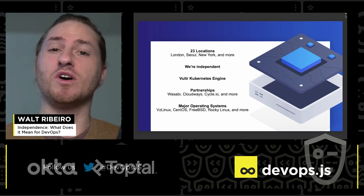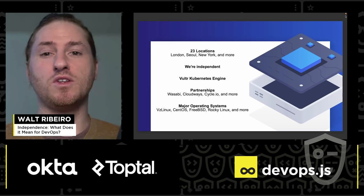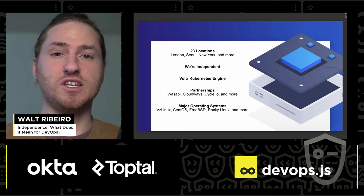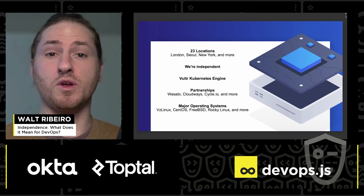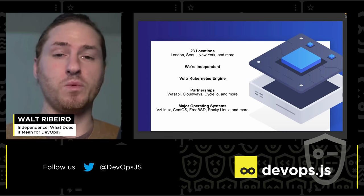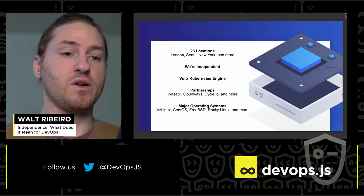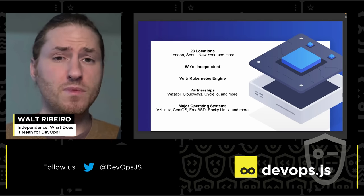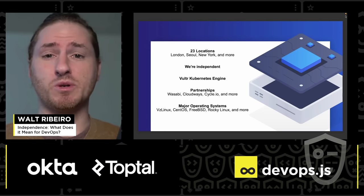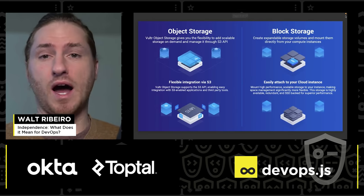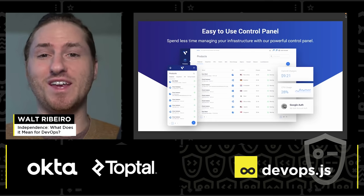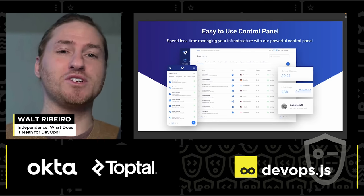We have 23 locations, we're independent, and we have this very powerful Vulture Kubernetes Engine. So if you're building an application on top of Kubernetes, rather than you dealing with the complexities of Kubernetes, let our engine deal with that and you just work on your product. We have great partnerships with Wasabi, Cloudways, and Cycle.io for your cloud orchestration and more. We have major operating systems — Windows, VZ, Linux — and much more. We also have object storage, bare metal, block storage, and a very easy-to-use control panel.